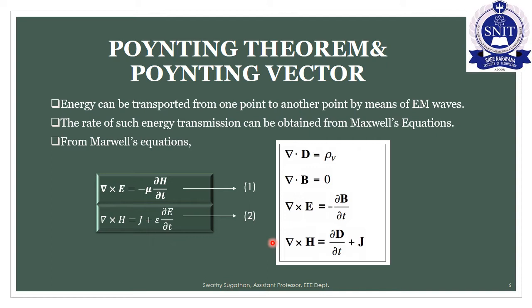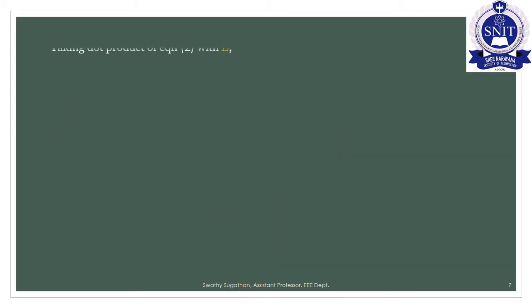The first equation we use is: del cross E = −∂B/∂t, where B = μH is substituted. The second equation is: del cross H = J + ∂D/∂t, where D = εE is substituted. We take the dot product of E with equation number 2.